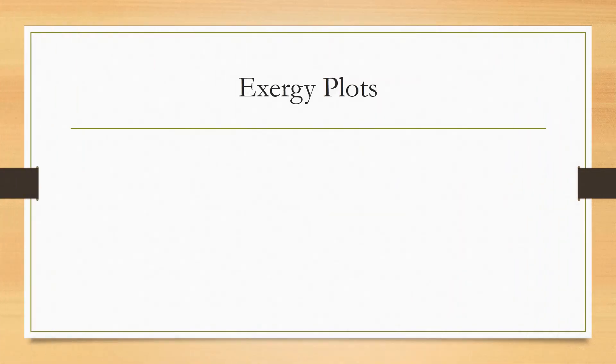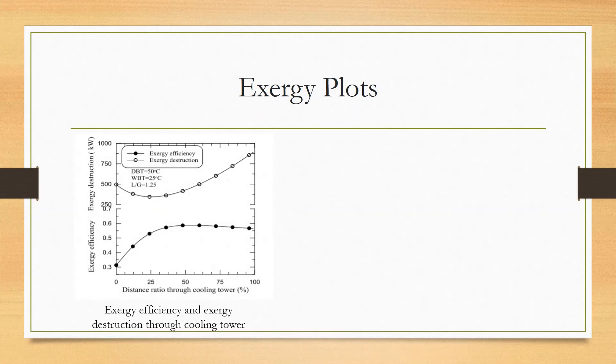Now we can analyze a few exergy plots. This plot shows the relationship of exergy efficiency and exergy destruction through a cooling tower. As you can see, exergy destruction rises after it reaches about 25% of the way through the tower. However, for exergy efficiency we can see that it flattens off and slightly declines after the initial 25% through the tower.